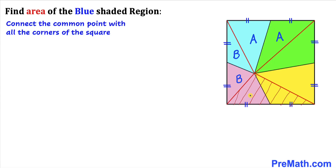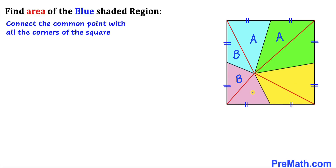Now let's focus on these next two triangles. Once again their base is the same — this base is the same as this base — and both of these triangles have the same height. So therefore we conclude that both of these triangles have the same area. If the area for this pink triangle is C, then the area for this yellow triangle is going to be C as well.